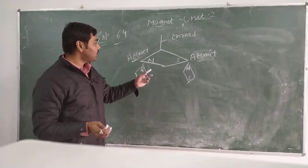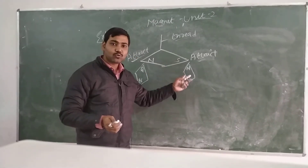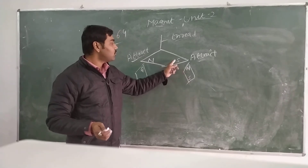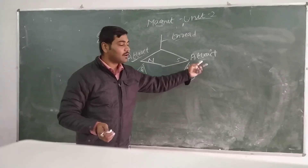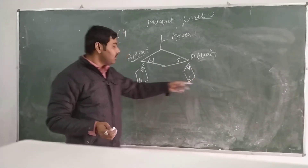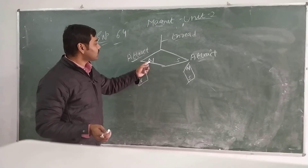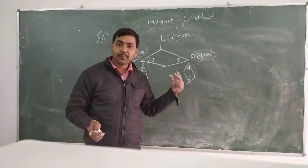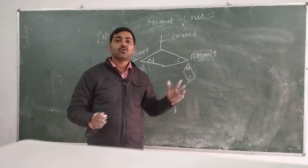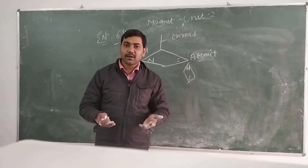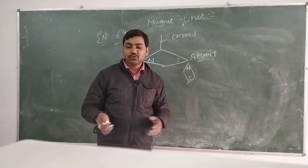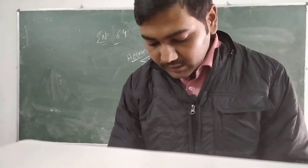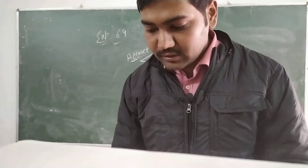If we bring different poles close together — like north pole of one and south pole of another — they attract. But if we bring similar poles close together, they repel. Different poles always attract each other and similar poles always repel each other.